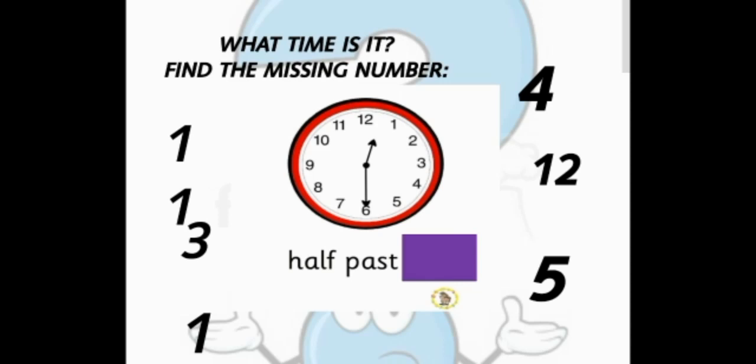Now think about which number will come in the black box. Yes. It is 12:30 or half past 12. So the number 12 will come in the black box.